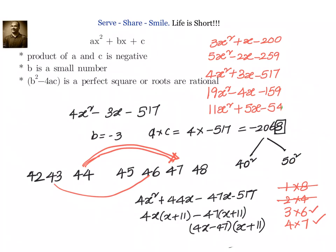Try to find out between which two squares it is there, multiples of 10, 40 square and 50 square. Write down all the numbers from 40 to 50. What is the combination which will give you sum of difference of 3 and the unit digit as 8? Only 1, 8, 2, 4, 3, 6, 4, 7.